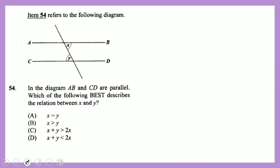Question 54: two parallel lines AB and CD are given. The relationship between angles x and y is that they are equal — they are co-interior or alternate angles that demonstrate equality.